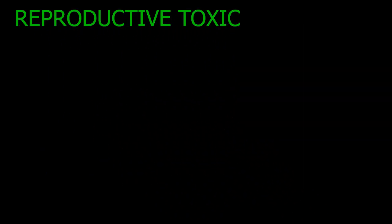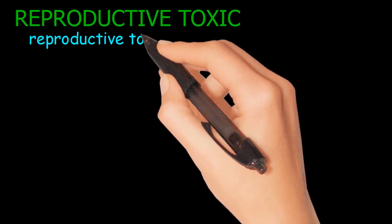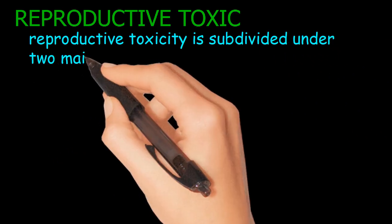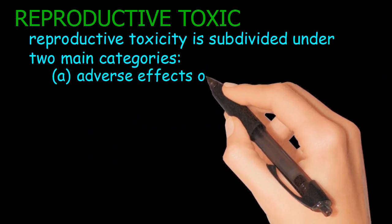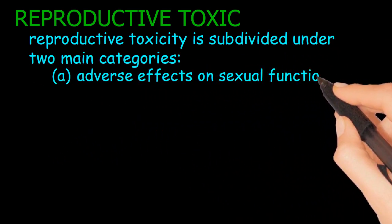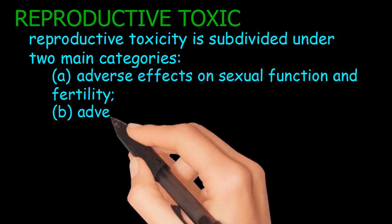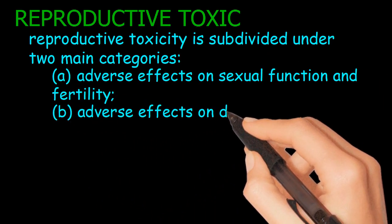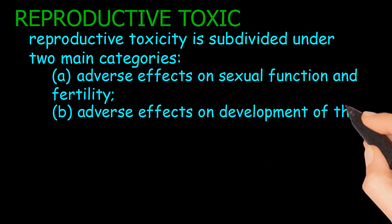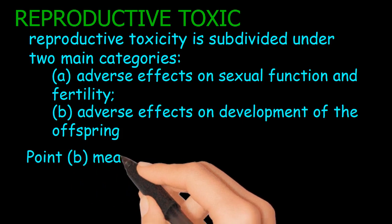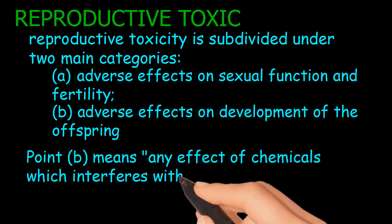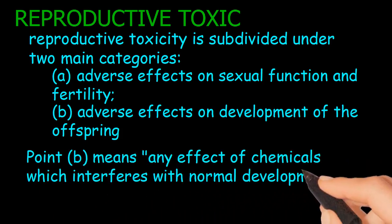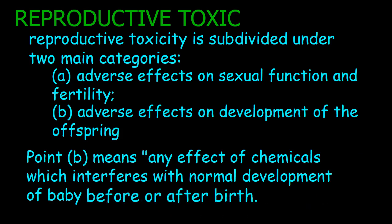Reproductive toxic: Reproductive toxicity is subdivided into two main categories. A: Adverse effects on sexual function and fertility. B: Adverse effects on development of the offspring — meaning any chemical that interferes with the normal development of a baby, before or after birth.